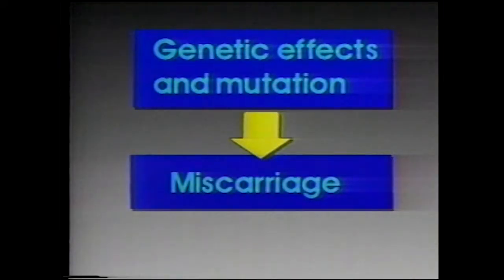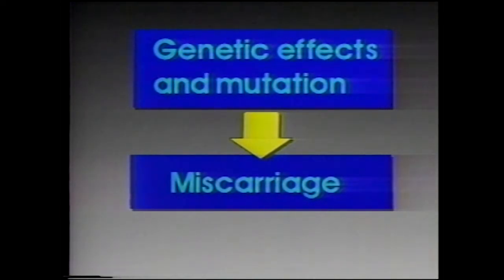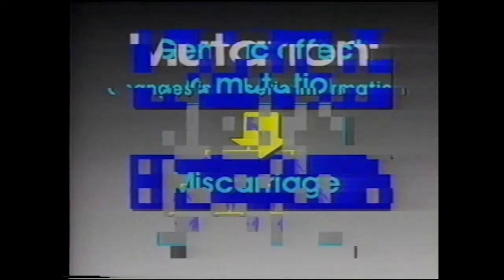Toxic effects that cause birth defects and miscarriage, decreased fertility, and general toxicity to the fetus are all detectable in the laboratory and are quantitated for the pesticides used in forestry and most of those common in agriculture. The potential for genetic effects or mutation, mentioned as a cause of miscarriage, also demands careful attention.